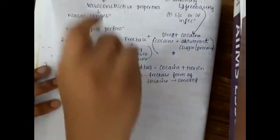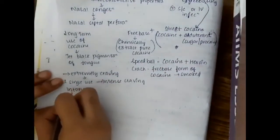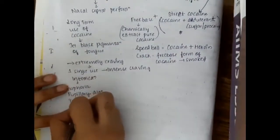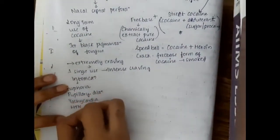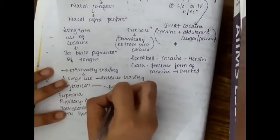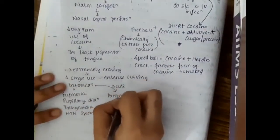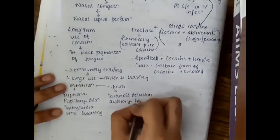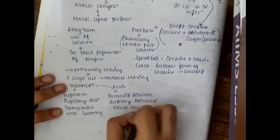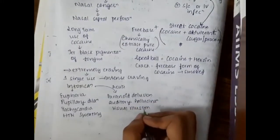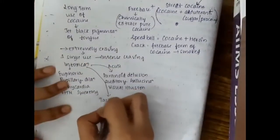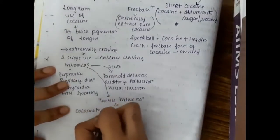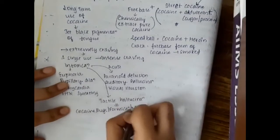For intoxication, cocaine causes euphoria, pupillary dilatation, tachycardia and hypertension. It causes fetting also. On acute cases, it causes paranoid delusion or auditory hallucinations and visual illusions. This cocaine also causes tactile hallucinations and that is called as cocaine bugs or formication or magnans phenomenon.